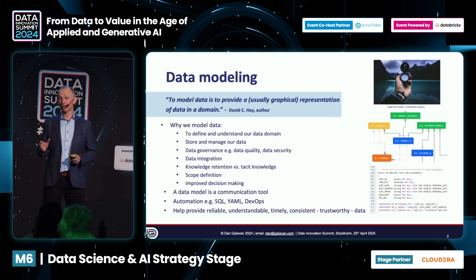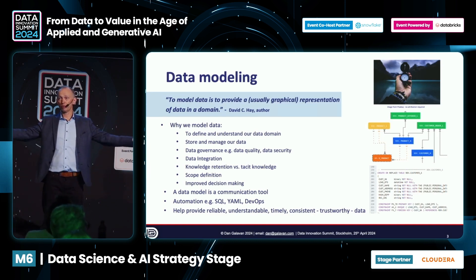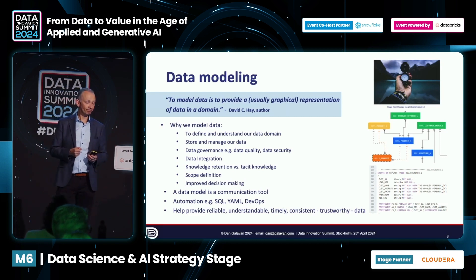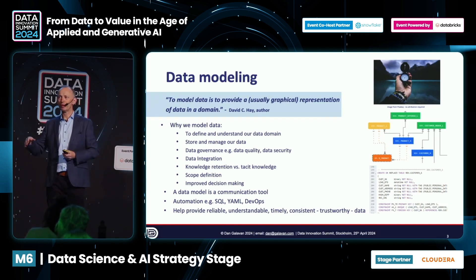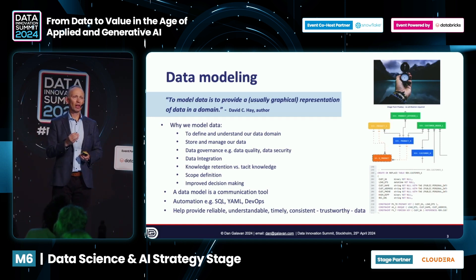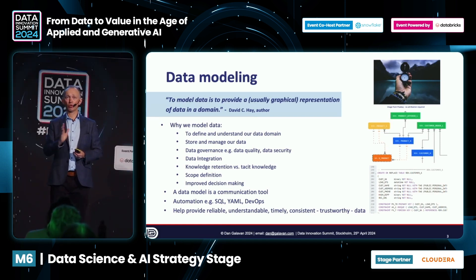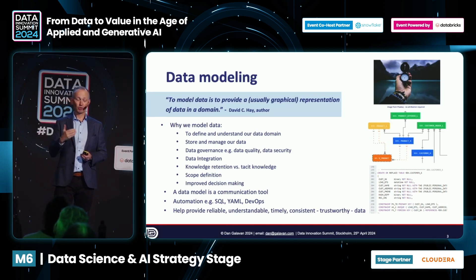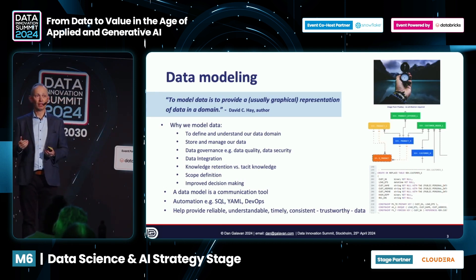Data modeling is key for data integration — when we're bringing different data sets together, like old school data warehousing or even with data mesh and data products. Scope definition is another use: a high-level model helps define what parts of our data domain we need to focus on. A data model is actually a communication tool — it acts like signposts. And we also use data modeling for automation, for example generating SQL. So it's all about getting to trustworthy data.